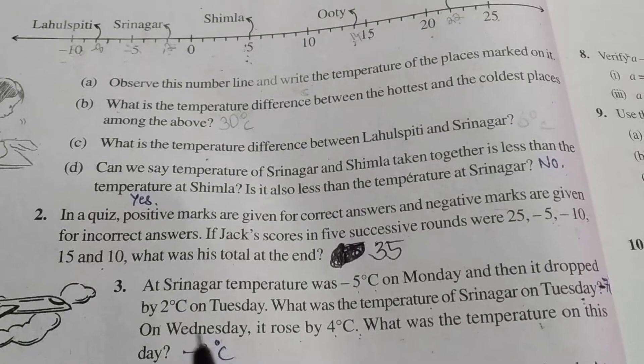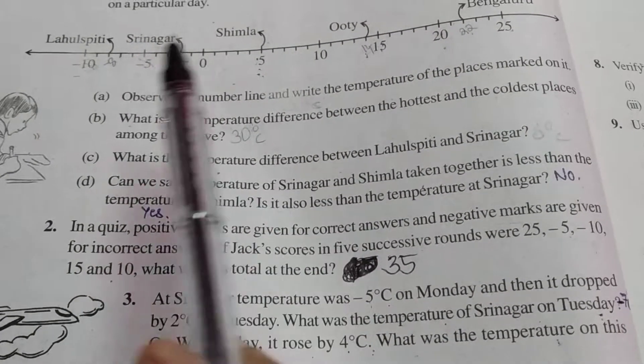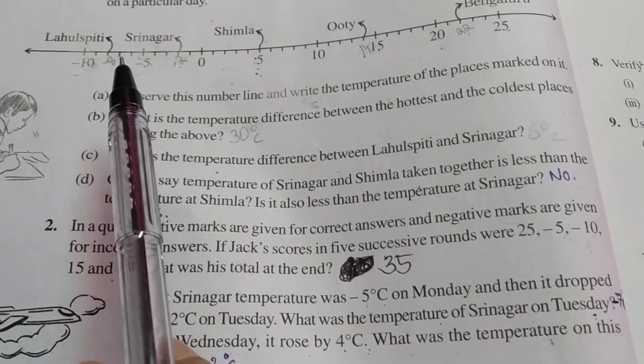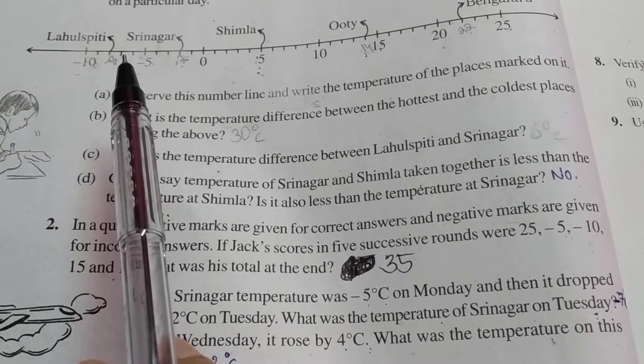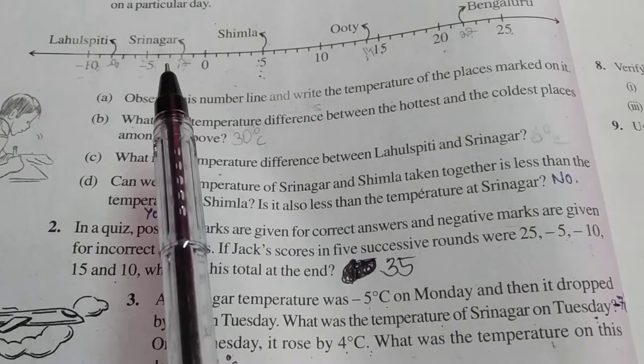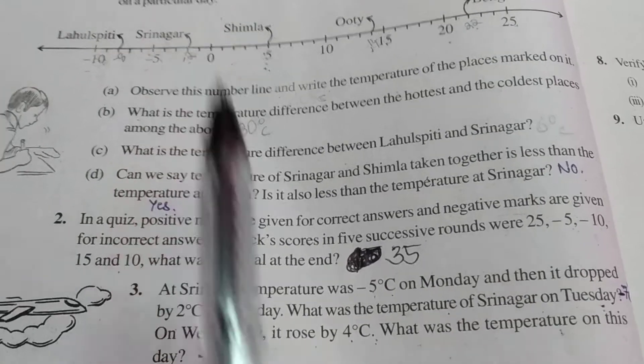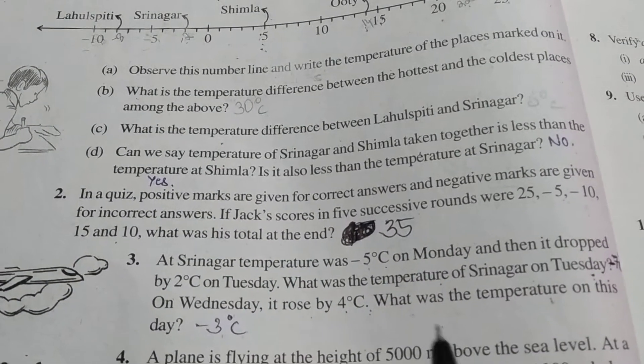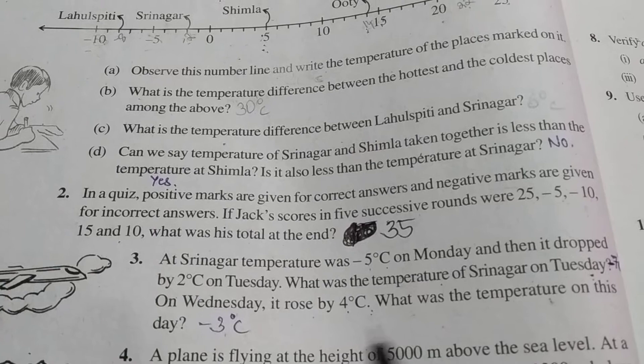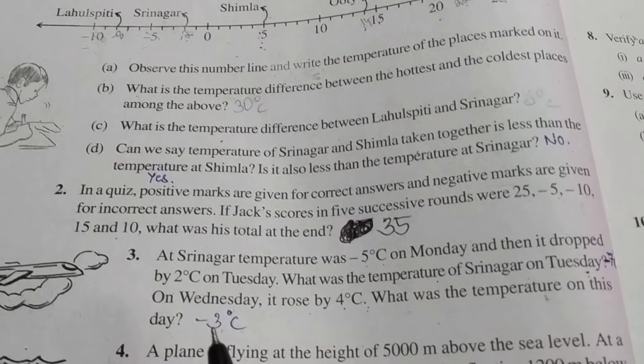Then on Wednesday, it rose by 4 degrees. So minus 7 plus 4. That is increasing, 1, 2, 3, 4. So here it is minus 3. So Srinagar's temperature on Wednesday is minus 3 degrees Celsius.